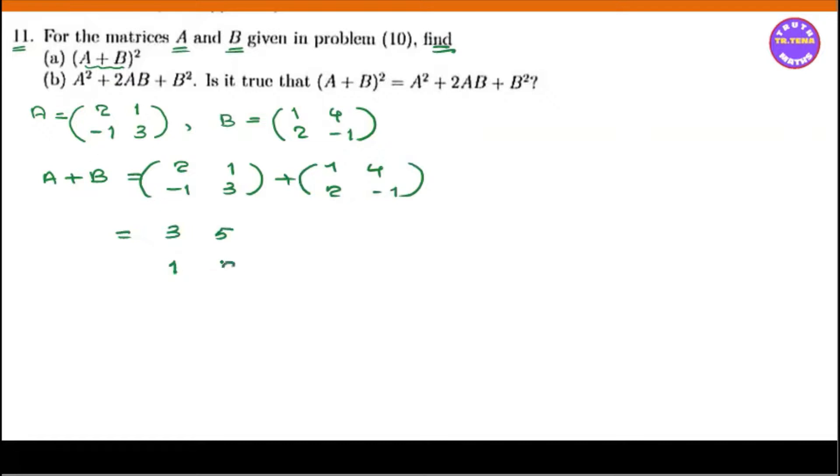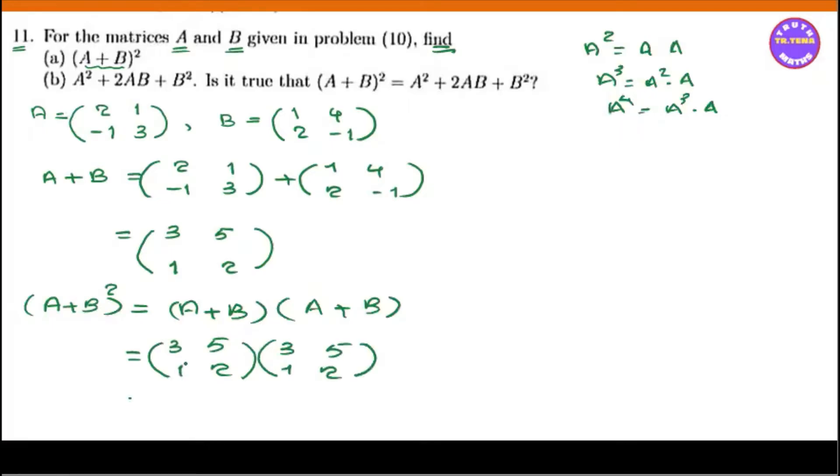Then we compute A plus B the whole square. A plus B times A plus B. A plus B is 3, 5, 1, 2 multiplied by 3, 5, 1, 2.